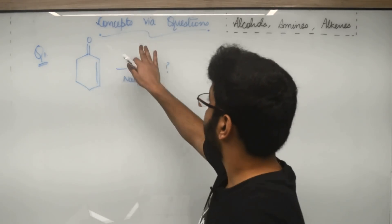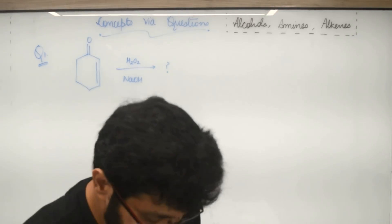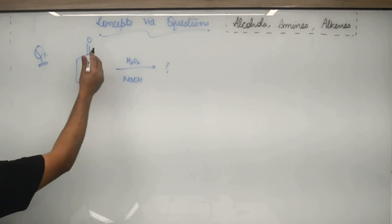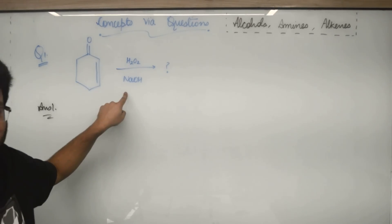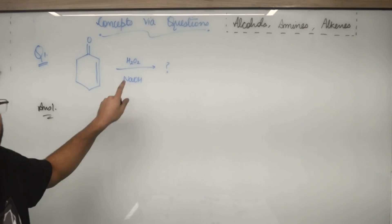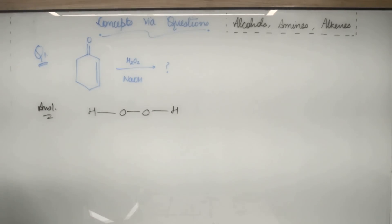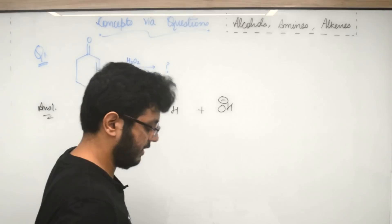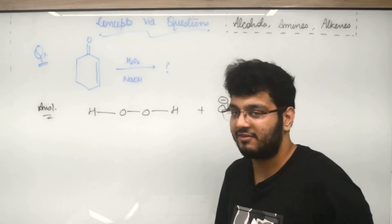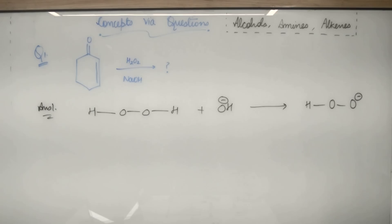I am taking the concepts via questions for alcohols, amines and alkenes. So first of all, you have been given this compound and you have been given H2O2 and NaOH. So what will the reaction mechanism be? What is H2O2? H2O2 is HOOH and we have been given base, that is NaOH, so OH minus is also present. Now OH minus extracts the most acidic hydrogen.